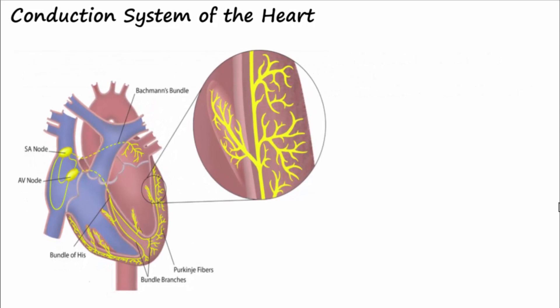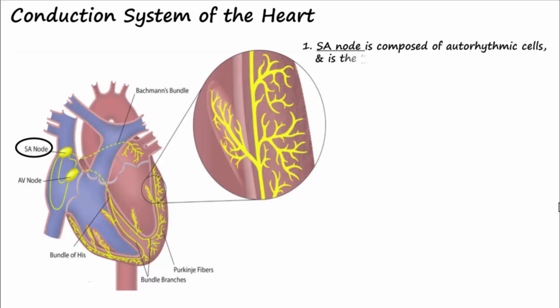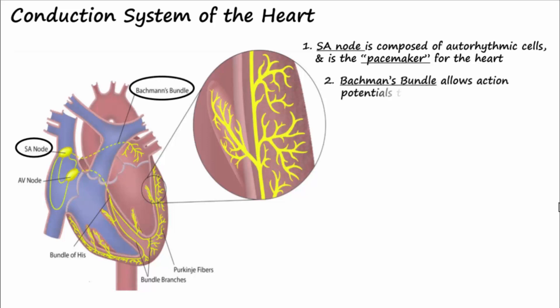The sinoatrial node or SA node is located where the superior vena cava connects to the posterior wall of the right atrium. The SA node is composed of autorhythmic cells and is the pacemaker for the heart, generating the action potentials that initiate contraction. To allow the two atria to contract simultaneously, there's a special band of rapidly conducting tissue called Bachmann's bundle that quickly spreads the action potential to the left atrium.